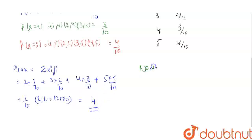Now, we find summation xi square into fi. That is 4 into 1 by 10 plus 3 square 9 into 2 by 10 plus 4 square 16 into 3 by 10 plus 5 square 25 into 4 by 10.